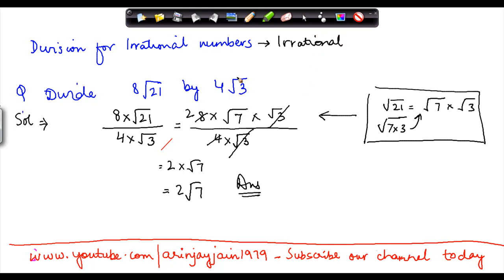Let's say if instead of 4 under root 3, I would have had 4 under root 21. Then instead of this, I would have got 8 into under root 21 divided by 4 into under root 21. This would have got cancelled here. 4 goes into 8 two times.